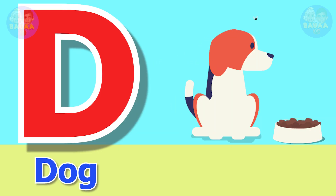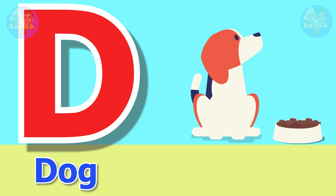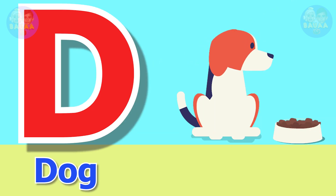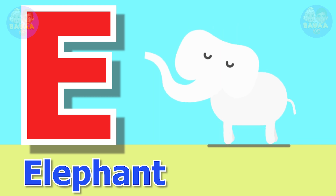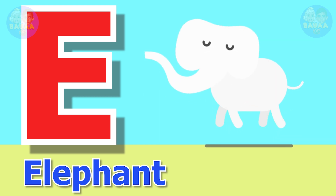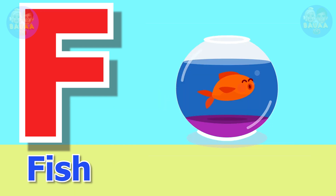D for dog, dog means kutta. E for elephant, elephant means aati. F for fish, fish means machili.